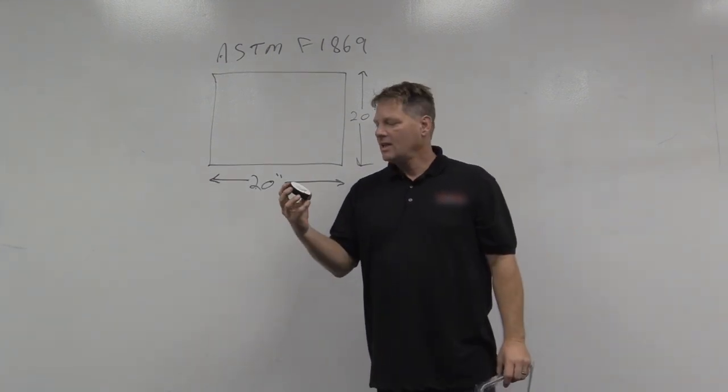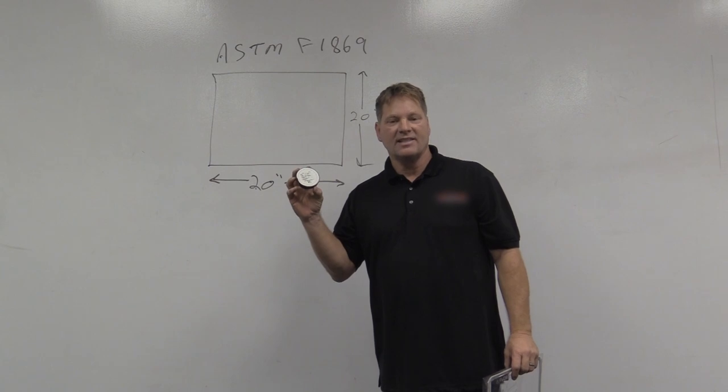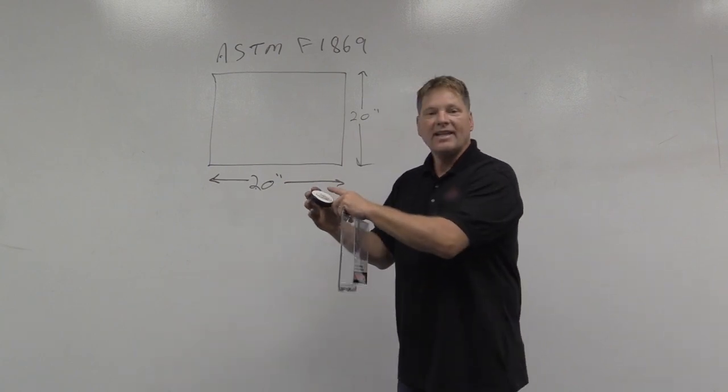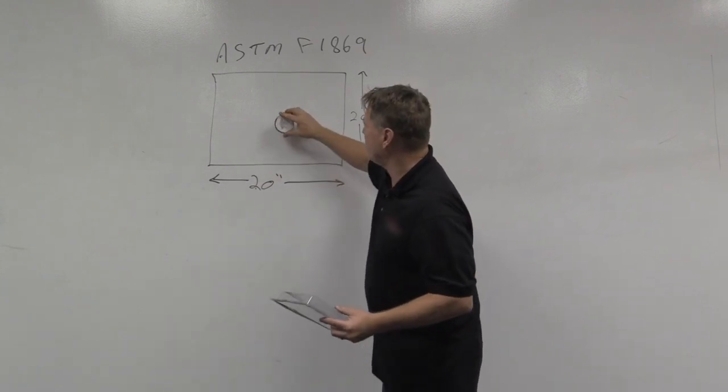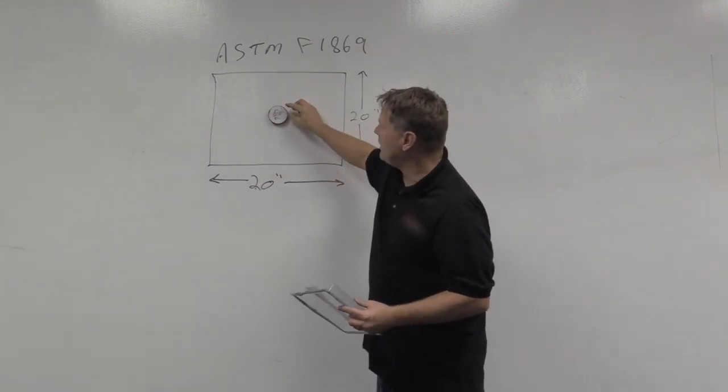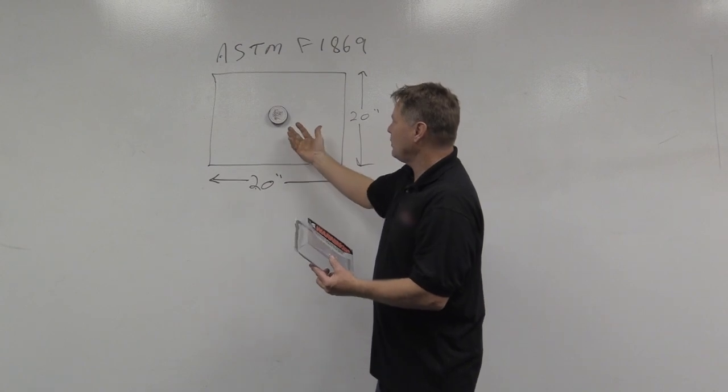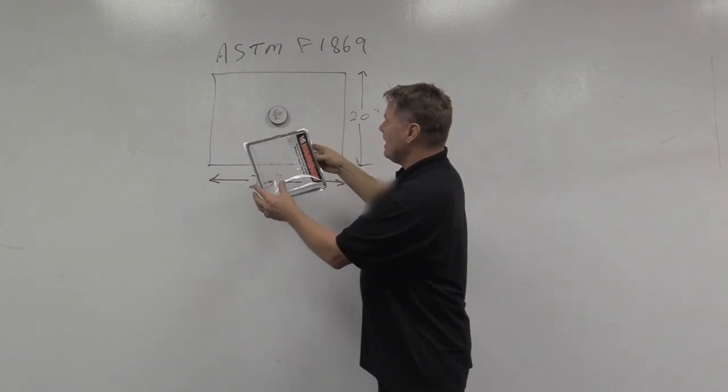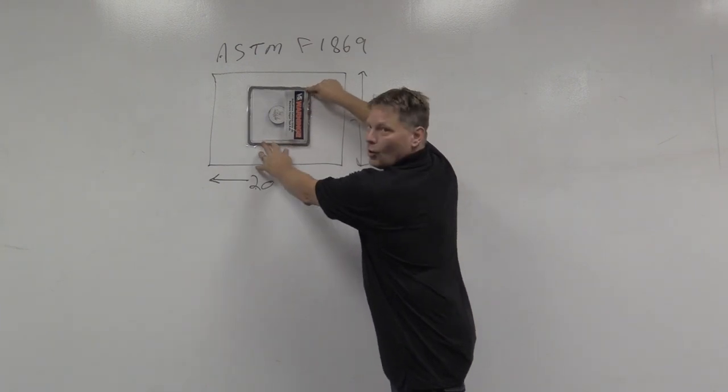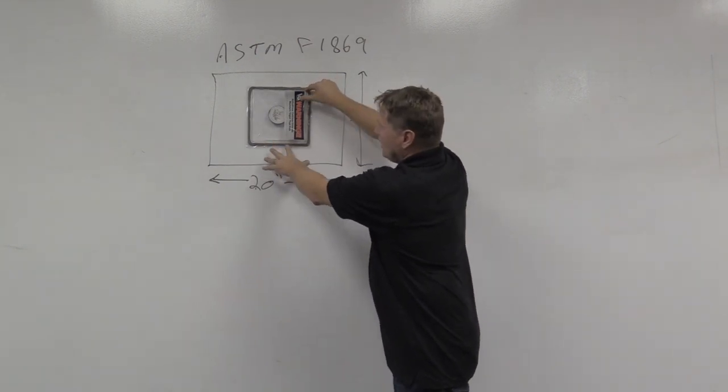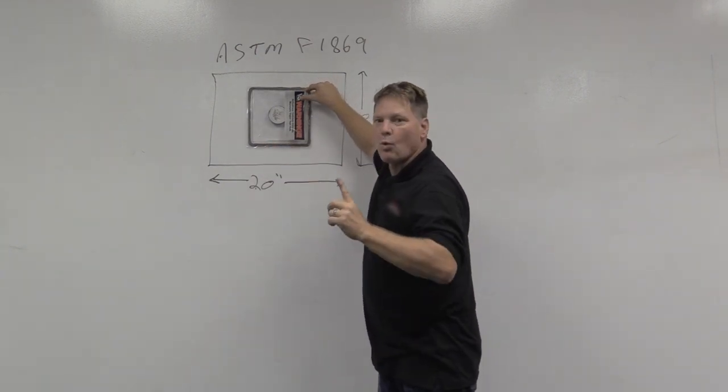Next, we take the anhydrous calcium chloride test that we know the weight of and we take the lid off and place it on the concrete. It's going vertical so I'm not going to do that now, but imagine this lid is off and I usually put it underneath it. Then we take this adhesive off and we stick the whole thing onto the floor.